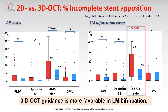This is the comparison in incomplete strut position. In all cases, there is a favorable trend with 3D OCT guidance to reduce incomplete strut position at the side branch ostium. However, in the left main bifurcation cases, this trend reached statistical significance. So, 3D OCT guidance is more favorable in left main bifurcation.